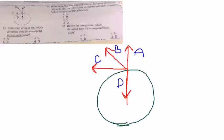Let's start with number 34. If the string attached to a ball at its center of rotation was suddenly cut, which path would the ball take? Assume the ball is rotating counterclockwise.